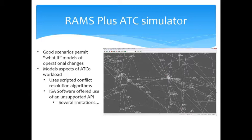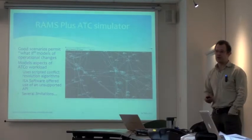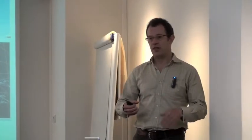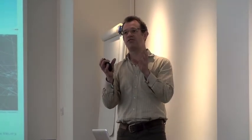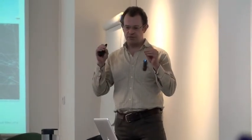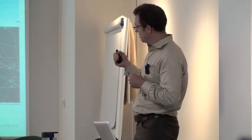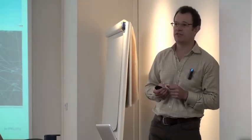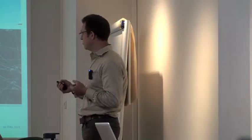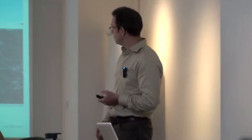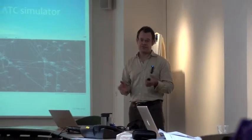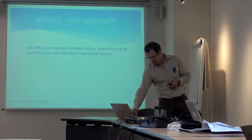We ended up choosing the RAMS Plus ATC simulator — there wasn't a great choice available at the time. We came and talked about what we could use and this seemed the best. We then talked to ISA Software who produced RAMS and asked if they had an API we could use to wrap the simulations around a search harness. They did provide an API, but unfortunately it was an early prototype written about ten years ago for the FAA, was unsupported, had a lot of bugs, and we were unable to make it work, so eventually we just had to run RAMS out of the box.